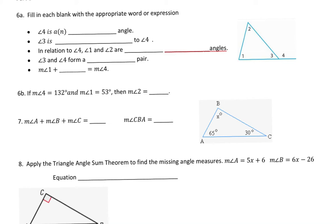Hey guys, here's part B of the test review. Fill in each blank with the appropriate word or expression. Angle 4 is a blank angle. Well, angle 4 is sitting outside the triangle, so that would make angle 4 an exterior angle.